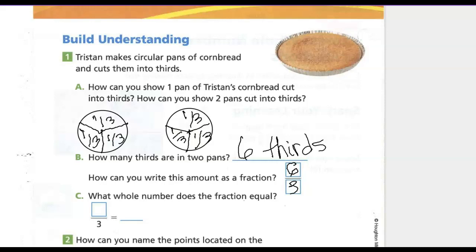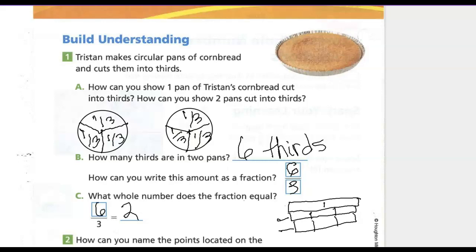How can you write this as a fraction? We have six parts of three, because each pan is three parts. What whole number does this fraction equal? If I had fraction strips — three-thirds here and three-thirds here — I would have one whole and two whole. So six-thirds equals two. You can also think of the fraction line as a division sign: how many threes are in six? Count by threes: three, six — or just know that two times three is six.